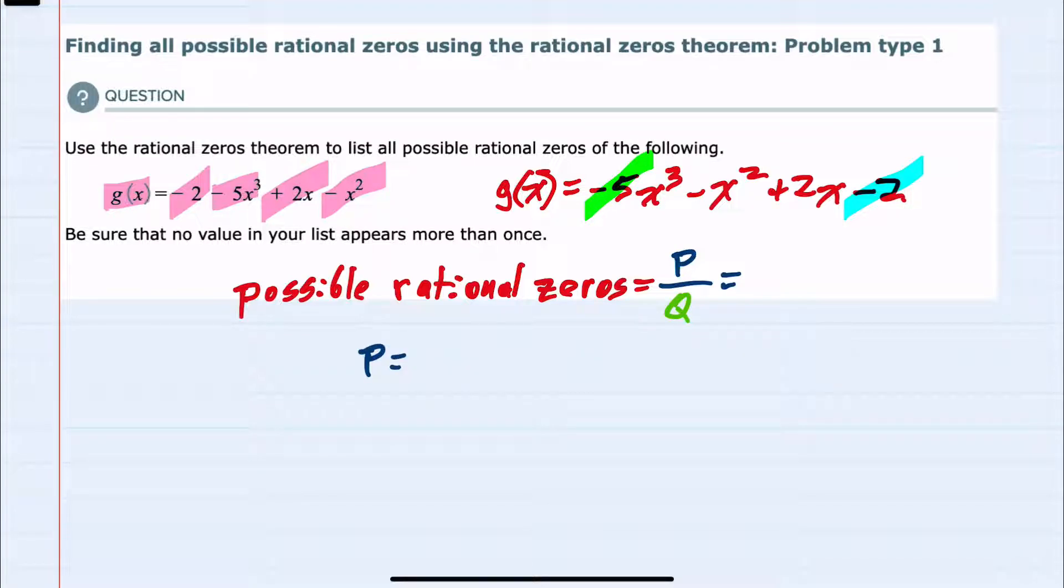For this example, my possible factors for -2 would be 2 and 1. Those are the only two possible factors, but they could be either positive or negative. For example, I could use 1 × -2 or -1 × 2 as factors of -2. So my possible factors for -2 are ±1 or ±2.